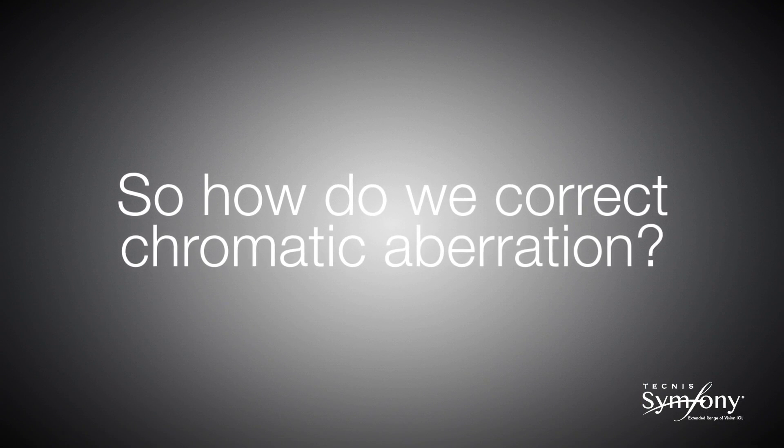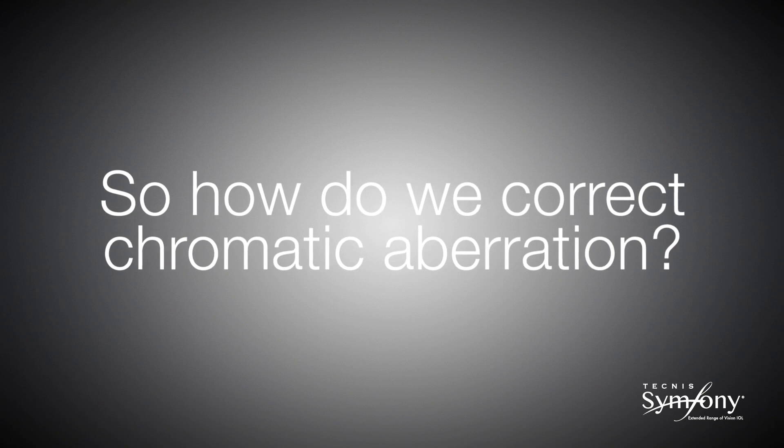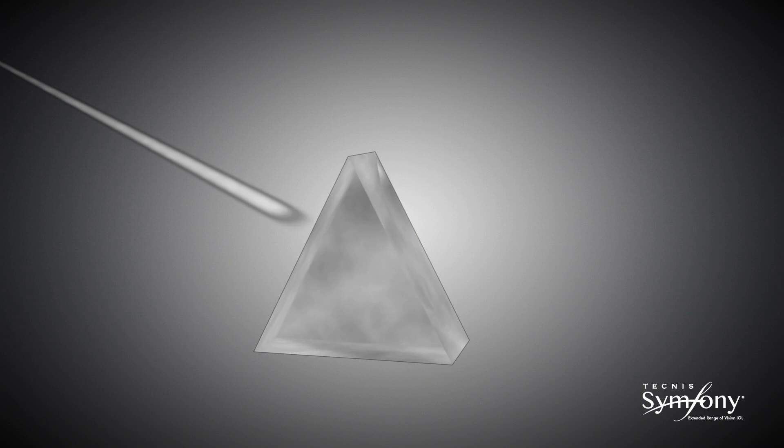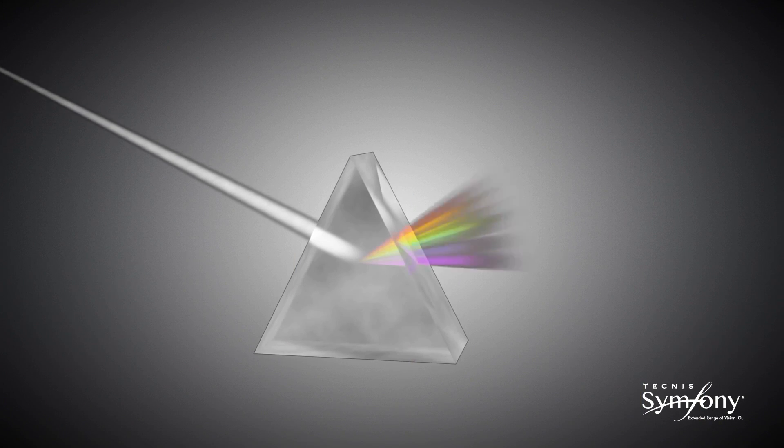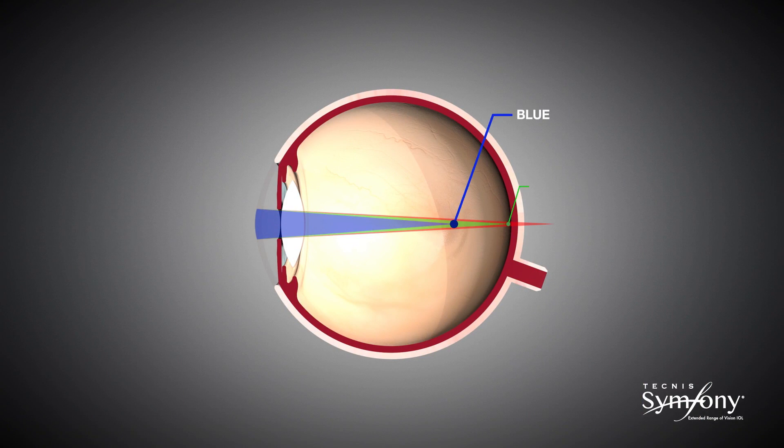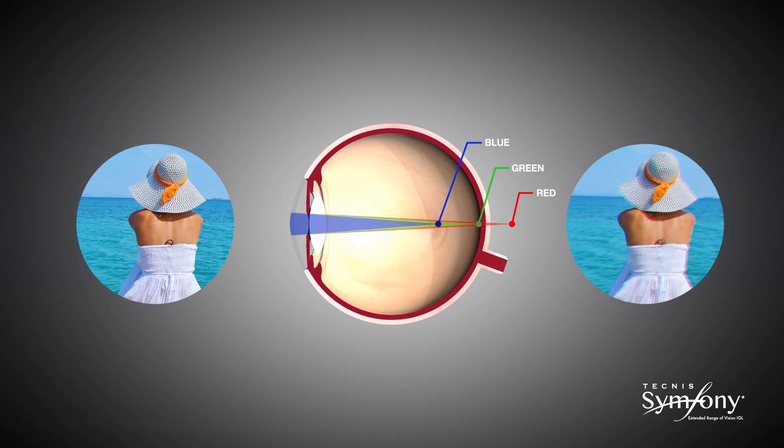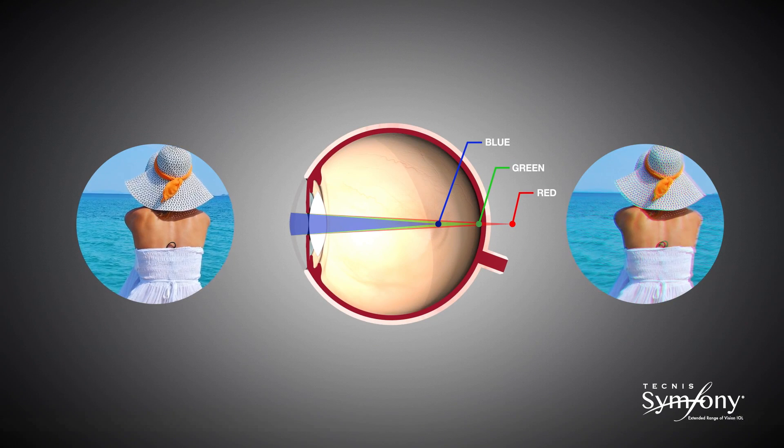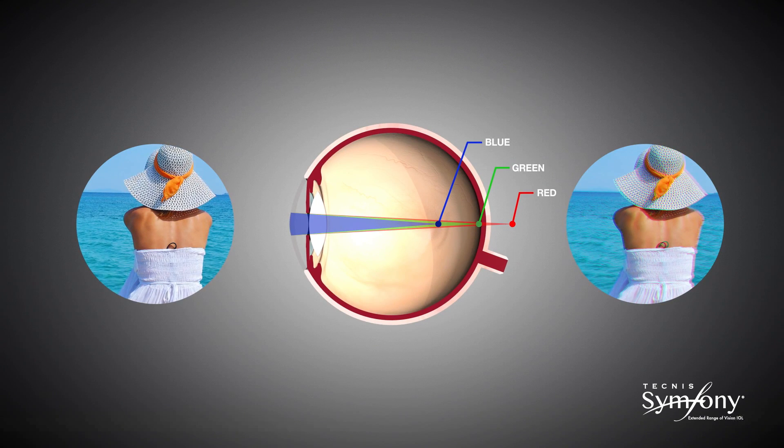Now let us look at how the achromatic technology works to correct chromatic aberration. Visible light is composed of a range of wavelengths that are red at one extreme and blue at the other. The cornea of the natural eye is a refractive lens which is more powerful for blue light than red. The eye can only be in focus for one wavelength at a time. As such, the remaining wavelengths of visible light which are out of focus cause blur and a reduction in contrast vision. This is called chromatic aberration.